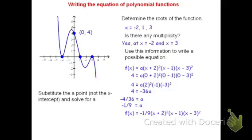Again, looking at the overall behavior: x squared, x, and x squared make x to the fifth. It's odd degree, meaning they have to go in different directions for end behavior. Because we have a negative coefficient, the left should go up and the right should go down, and that matches the graph. We could substitute in a couple of points to make sure it works, and that would also be a good idea.